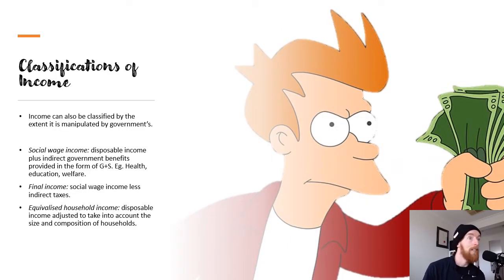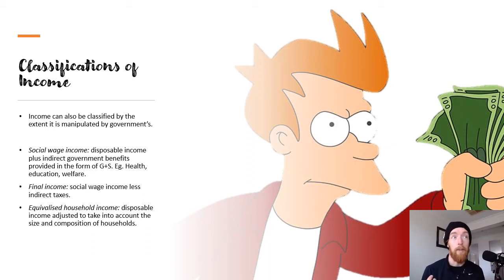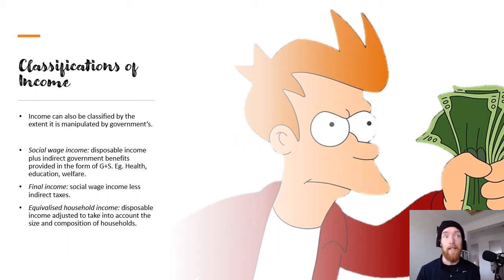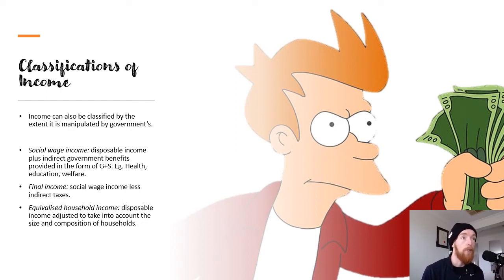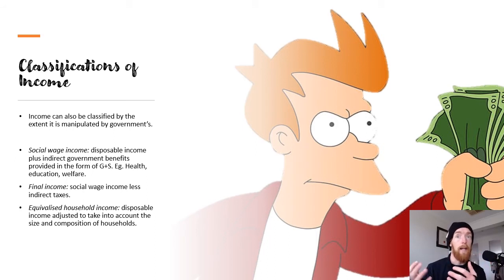We've also got social wage income, which is your disposable income plus indirect government benefits provided in the form of goods and services — health, education, welfare. It accounts for the extra benefits you receive that would otherwise cost more, like public education versus private education, or going through public healthcare at no cost. And then your final income, which is your social wage less any indirect taxes — things like GST, excise taxes on alcohol, cigarettes, petrol, and any extra taxes you pay on goods and services you purchase.